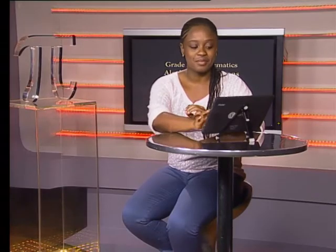In order to understand surds, we first need to understand squared and cubed numbers. A perfect square is the product of an integer multiplied by itself. For example, 4 is a perfect square because 2 times 2, or 2 squared, is equal to 4.